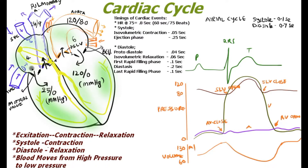As ventricular pressure rises and crosses the atrial pressure, the AV valves close to prevent regurgitation of blood into the atrium. At this time the semilunar valves are already in a closed position, because the minimum pressure in the aorta is around 80 and in the pulmonary arteries around 9, preventing backward movement of blood. The pressure in the ventricle then drops toward zero in the diastole phase.